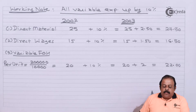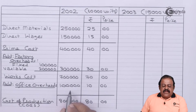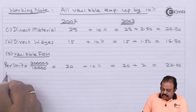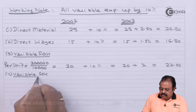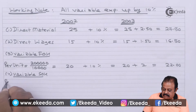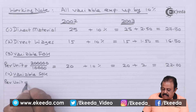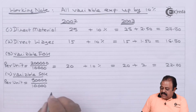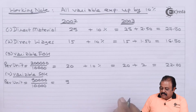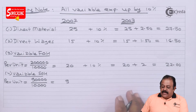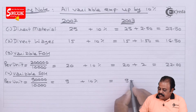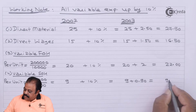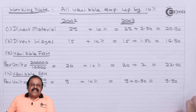Office overheads are totally fixed. For selling and distribution overheads, the variable portion is ₹90,000. Per unit variable selling overheads: ₹90,000 divided by 10,000 units equals ₹9 per unit. Adding 10 percent (₹0.90), the estimated variable selling overhead per unit becomes ₹9.90. We have now considered all variable expenses in the working note.